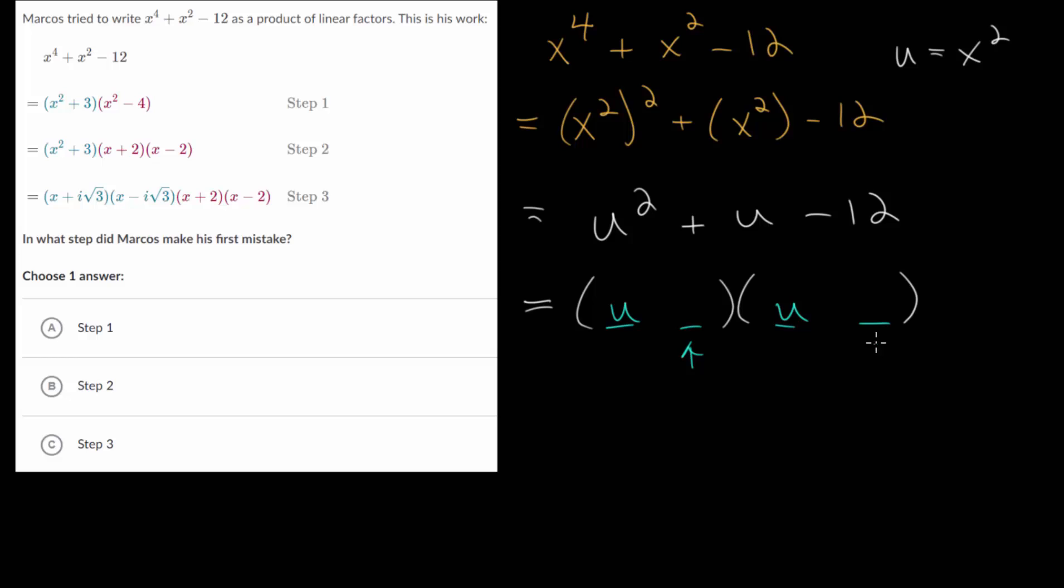This term and this term here have to multiply to negative 12, but add to the coefficient on u, which in this case is positive 1. So let's think about which numbers multiply to negative 12 and also add to positive 1.